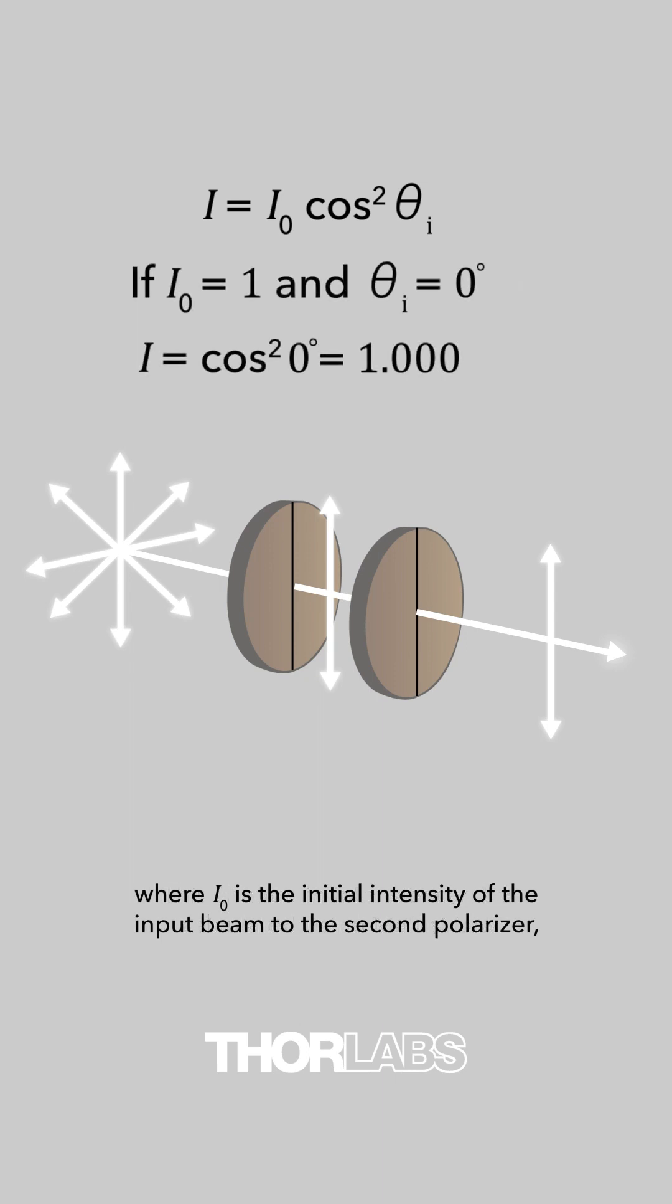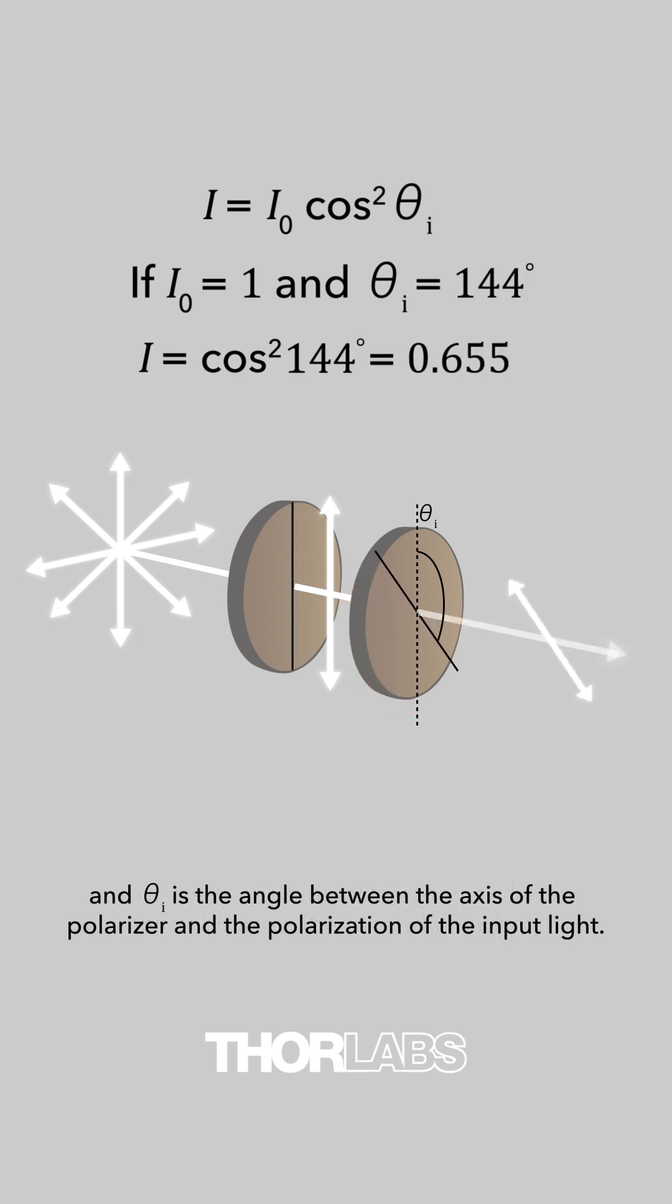Where I₀ is the initial intensity of the input beam to the second polarizer and theta i is the angle between the axis of the polarizer and the polarization of the input light.